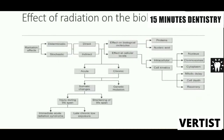Radiation effects on biological tissues occur because of the property of ionization, which brings about various biological changes. Radiation effects can be classified as deterministic and stochastic, direct or indirect, and acute or chronic. At the biological molecule level, proteins and nucleic acids are affected. At the cellular level, intracellular kinetics are affected. Effects are also classified as somatic — changes seen during the individual's lifetime, including possible shortening of lifespan — and genetic, which appear in offspring. Acute exposure has immediate effects; chronic exposure results in gradual changes.